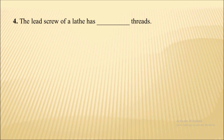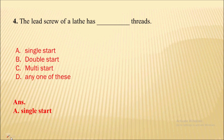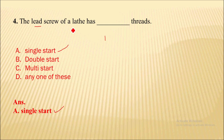Next question: the lead screw of a lathe is used to engage with the carriage in the production of threads, and it has a single start thread. So the correct option is A.